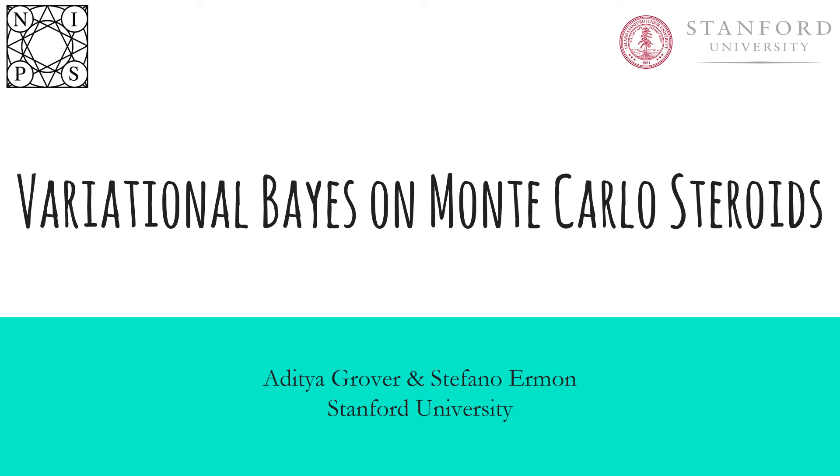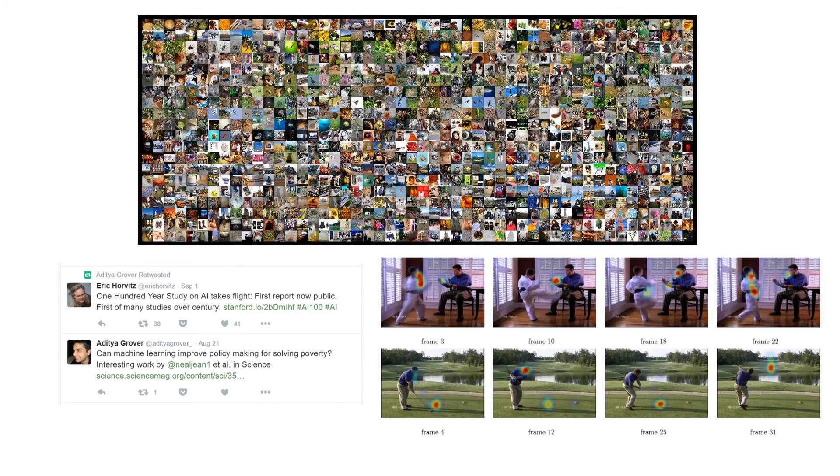Variational Bayes on Monte Carlo Steroids by Aditya Grover and Stefano Armon from Stanford University. How can we learn probability distributions over vast quantities of unlabeled sensory data in the form of images, text, and video to build next generation of machine learning systems?